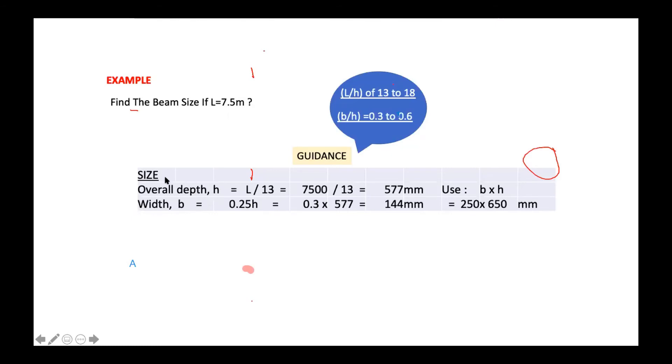So, as I said just now, we can use the control deflection using the deflection control. Therefore, the rule of thumb is that L over H between 13 to 18. Yeah. So, here, let's say we use 13. You can choose 13 to 18, maybe 14, 15, 16, and so on. But, let us use 13 now. So, you can get H.